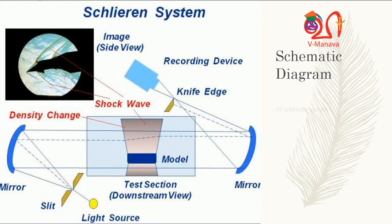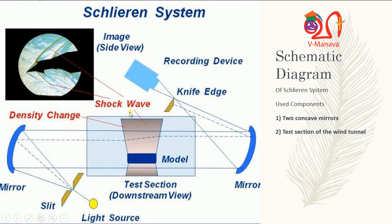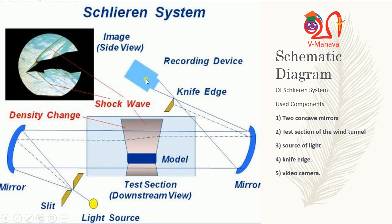This is a schematic diagram of a Schlieren system. It consists of some components: two concave mirrors on each side, number one here and number two here; the test section of the wind tunnel where we place our test models; the source of light and a knife-edge; and finally a video camera to record the shock waves or any other waves. The light source is split by a slit so it passes as parallel rays through the test section. These parallel rays, which pass through the test section, are bent and carry information. That image is captured by the mirror and sent to the recording device.